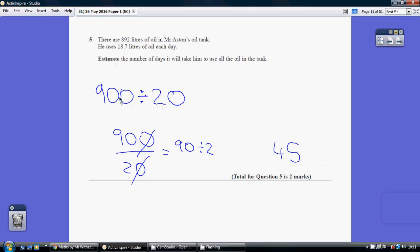So to work out the number of days, we do 900 divided by 20. 900 divided by 20. Well, dividing the numerator and denominator, top and bottom, by 10, we get 90 divided by 2, which is 45.